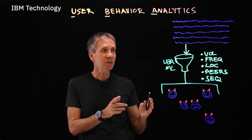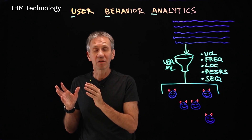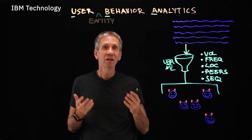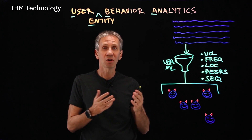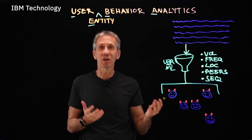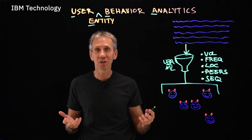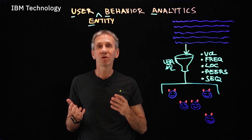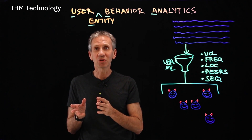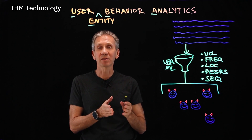I could also take these same techniques applied to users with UBA and apply them to entities — in other words, our network routers, switches, servers, and other things that are not humans. We call that user entity behavior analytics. So it covers human users as well as other entities in our network and environment, and we can baseline them and look for anomalies. We use this kind of technology in conjunction with a SIEM — a security information event management system — to triage and figure out where to put our focus, do investigations, avoid false positives, and focus in on the actual users creating the real threat in the environment.